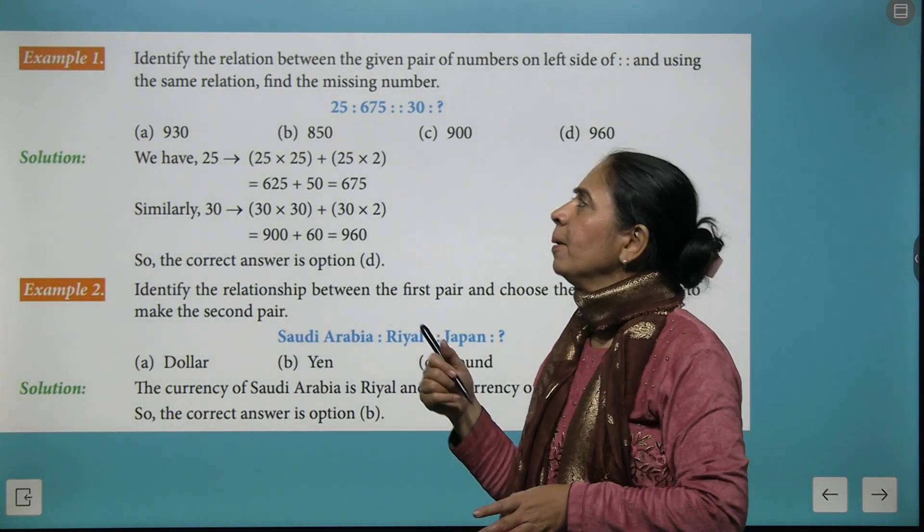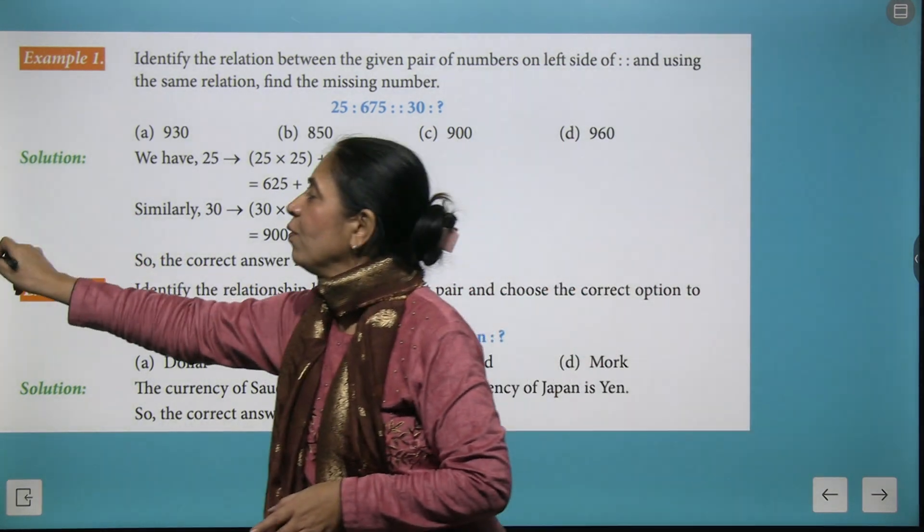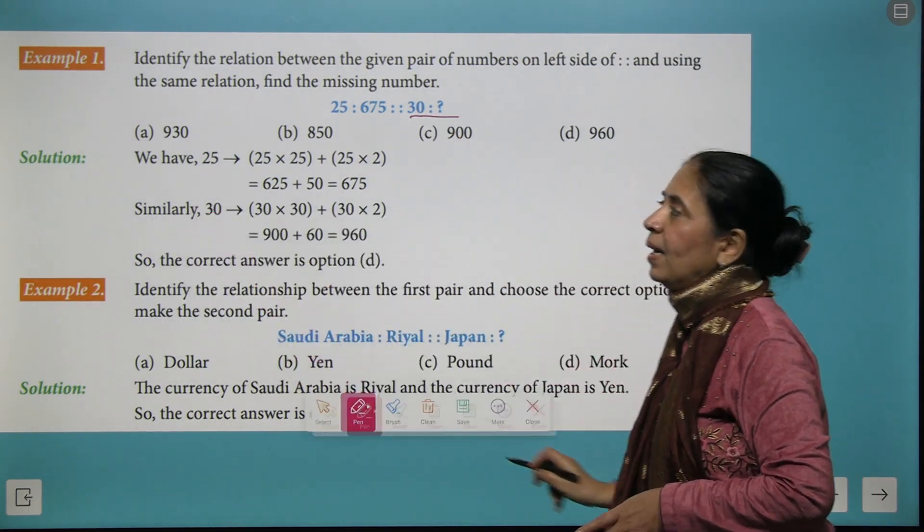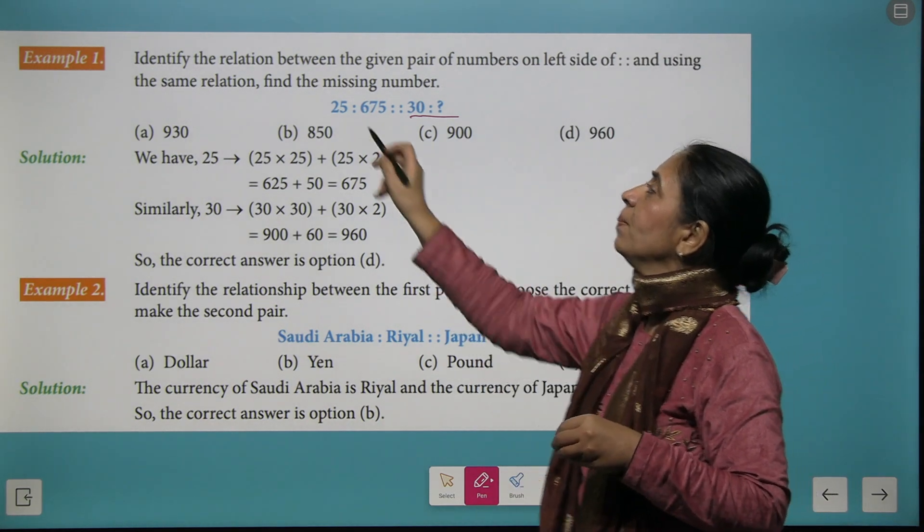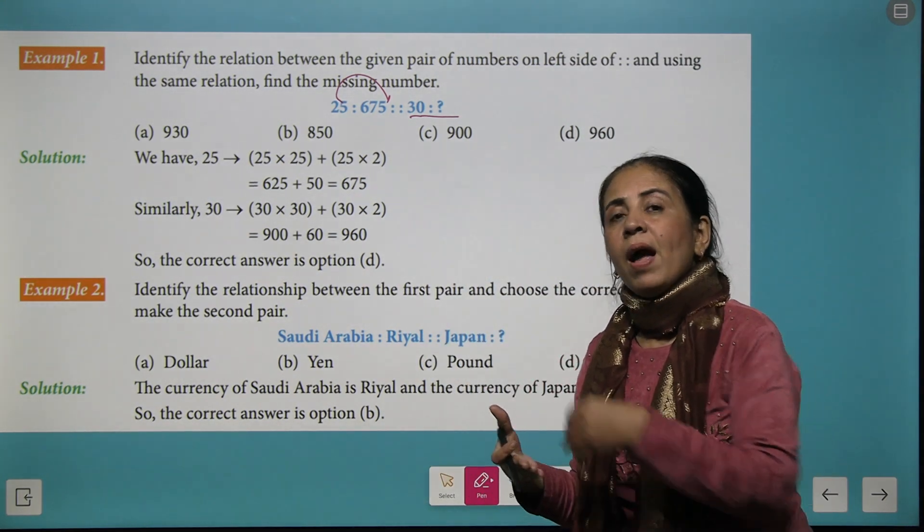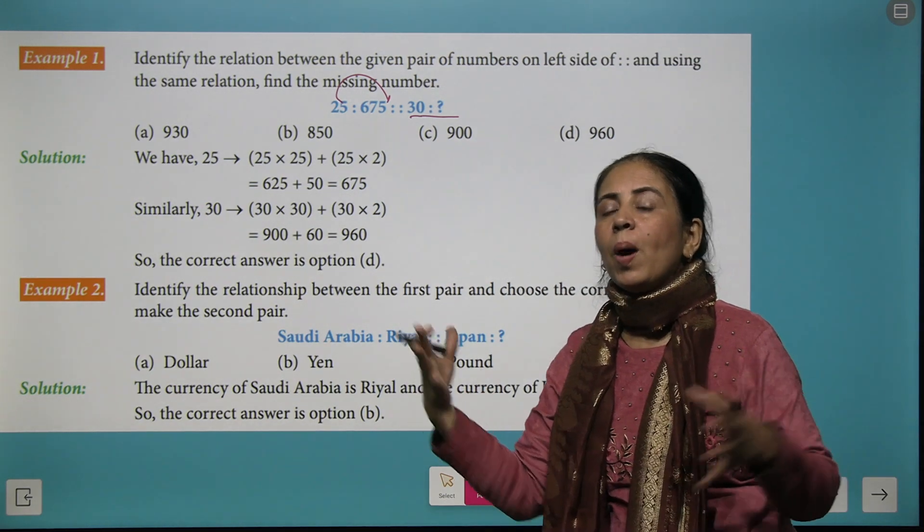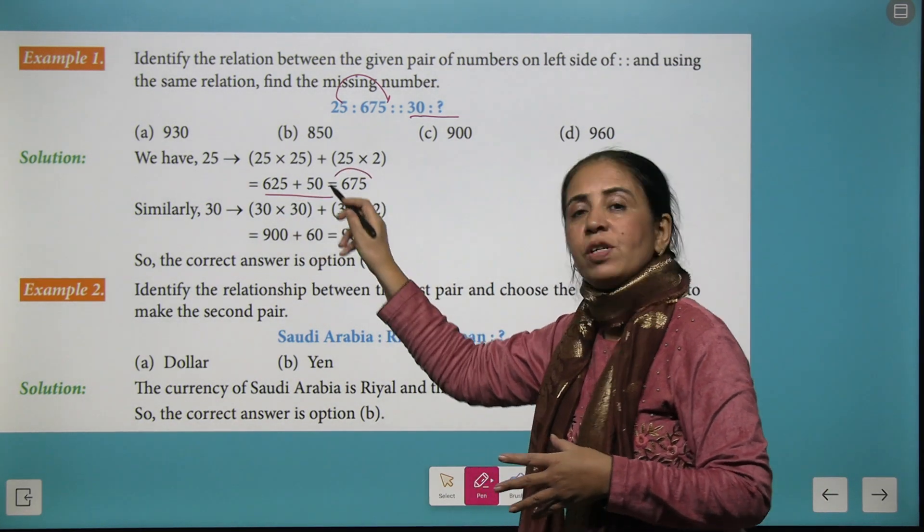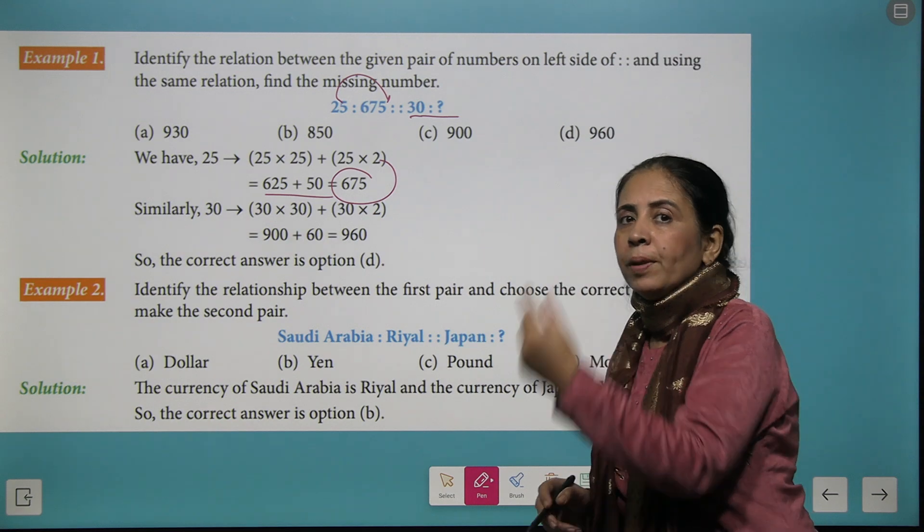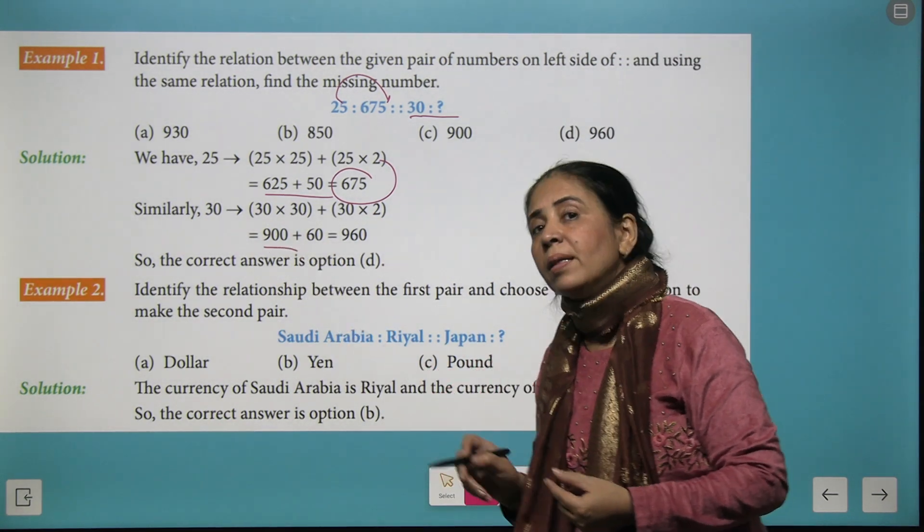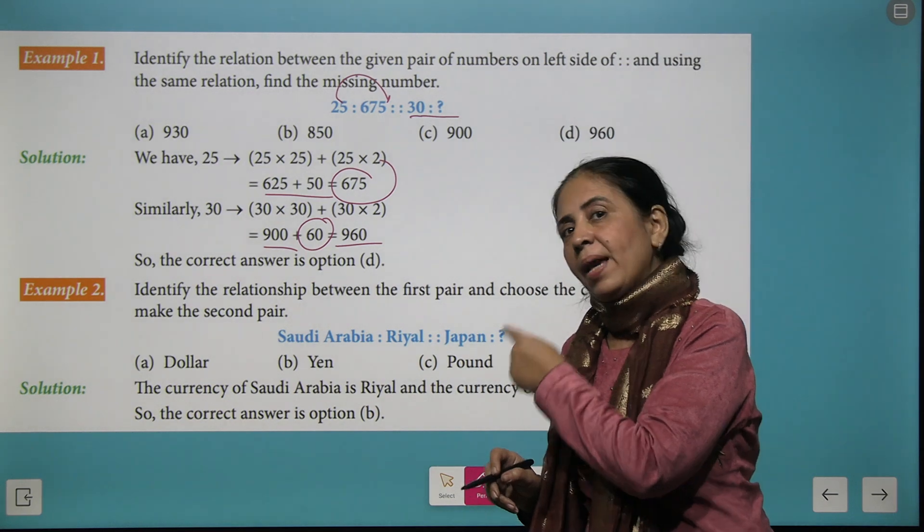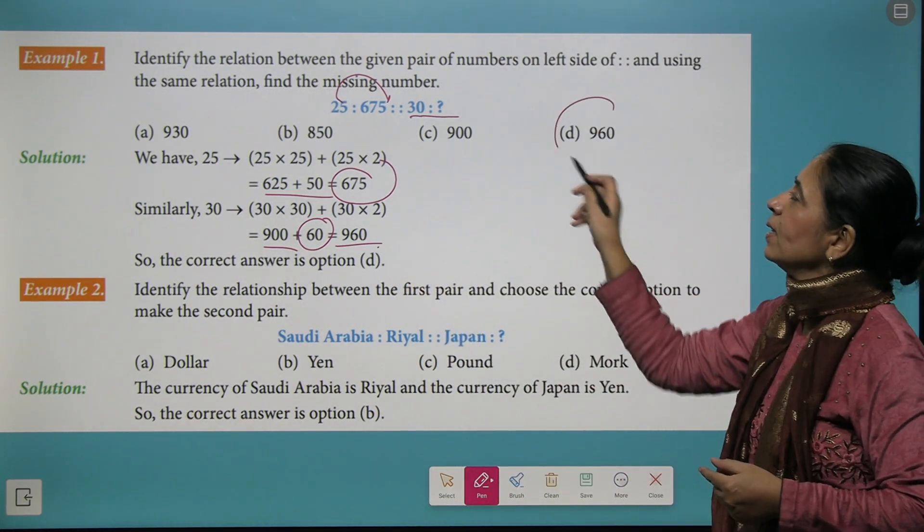Let's try a few more examples here. So the first question is 25 is to 675. What is 30 is to the missing number? So first create the relation between 25 and 675. Let's see 25 times 25 is 625 and 25 times 2 is 50. When you add 625 and 50 we get 675. Am I right? Let's try the same thing for 30. 30 times 30 makes 900 and 30 times 2 makes 60. So adding them together we get 960. So your correct option is D.